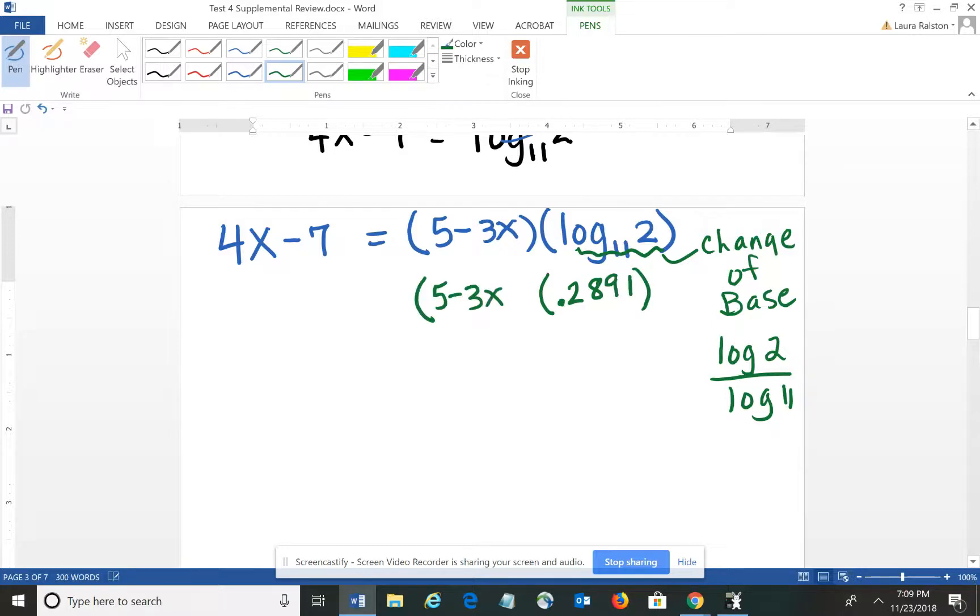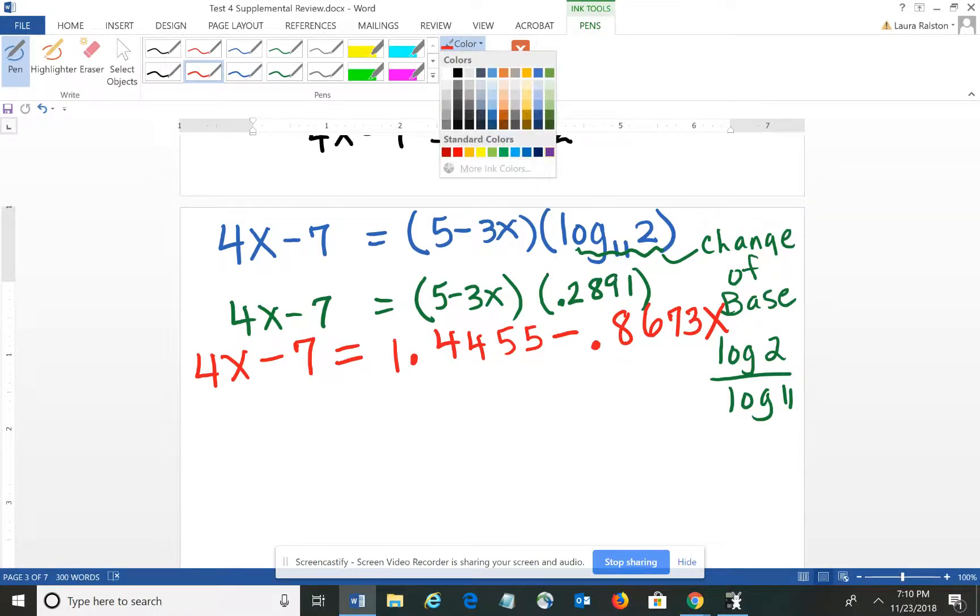Then I can distribute that and work the problem, then it becomes a basic algebra problem. So if I do the distributing, I'm going to have 4X minus 7 equals .2891 times 5 is 1.4455 minus 3 times .2891 is .8673X. I notice that I have X's on both sides and constants on both sides, so I'm going to get those together.